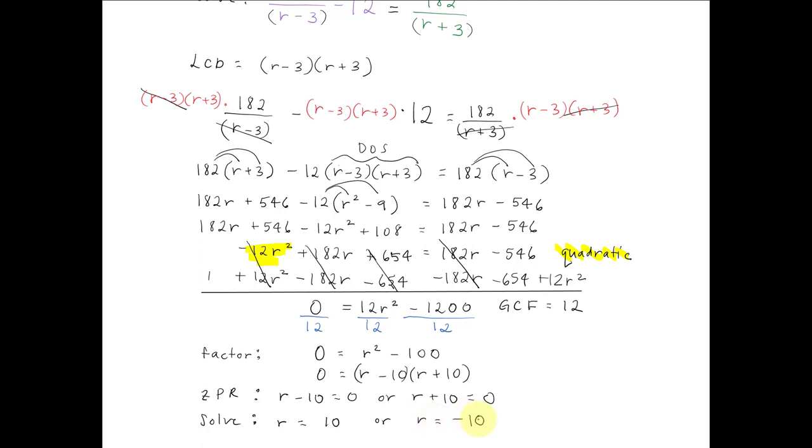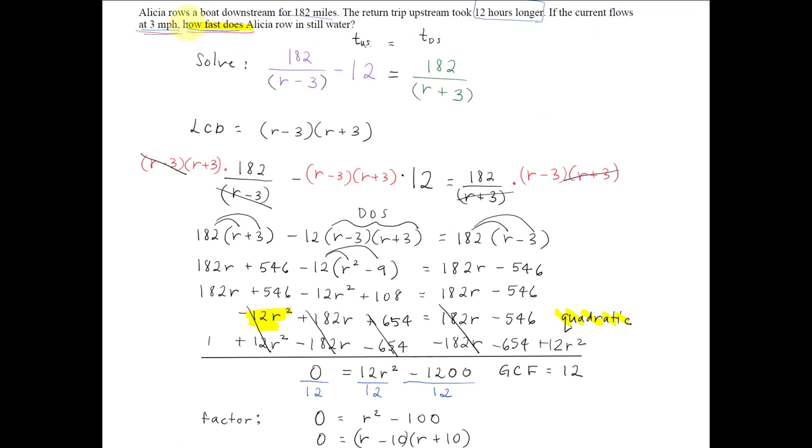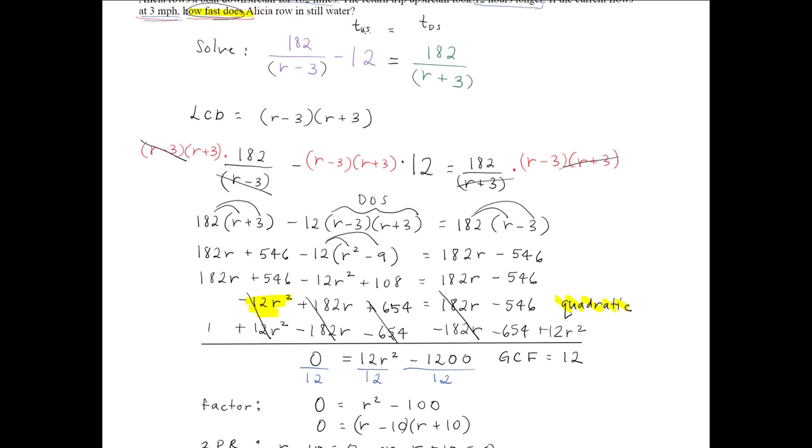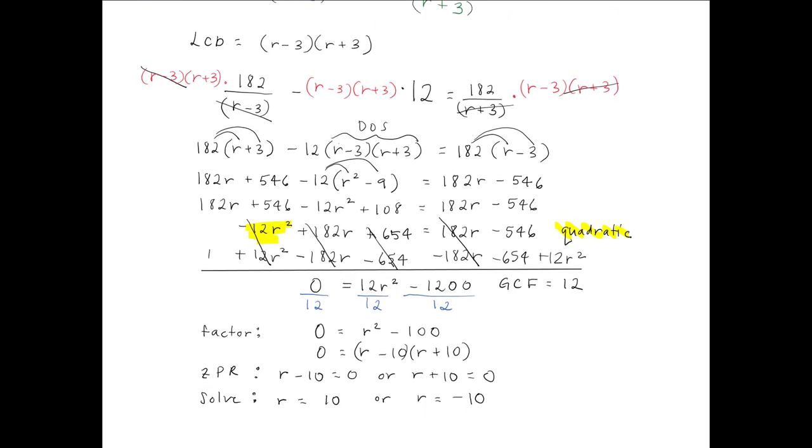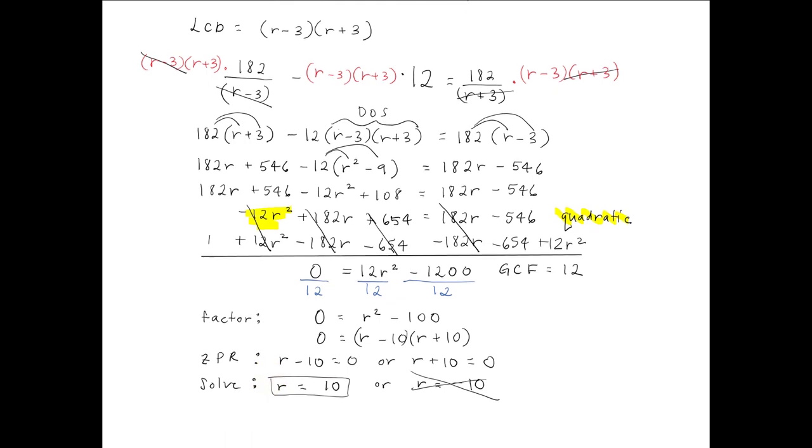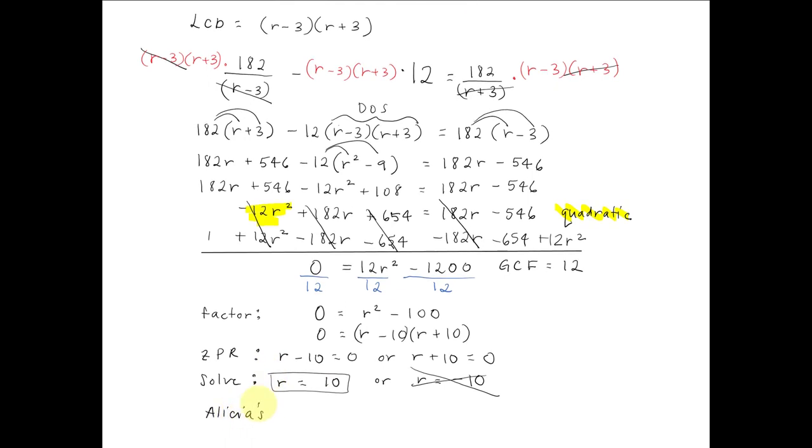However, again, what are we looking for? We're looking for how fast Alicia rowed in still water. Well, how fast means it's a rate. And it doesn't make sense to go negative 10 miles per hour. So we omit that answer and we keep the positive one. And then we could say something like, Alicia's rate in still water is 10 miles per hour.